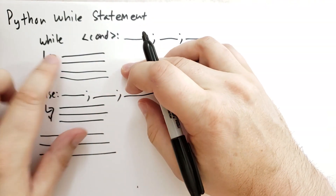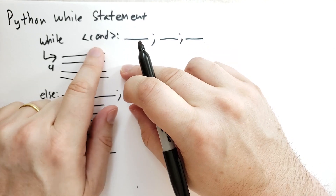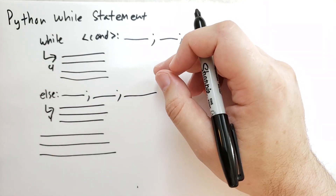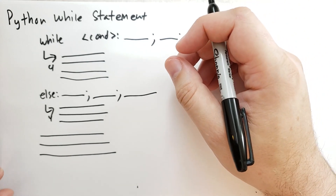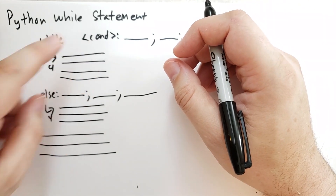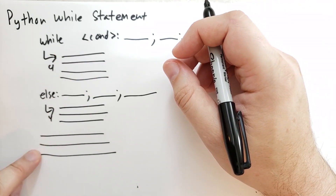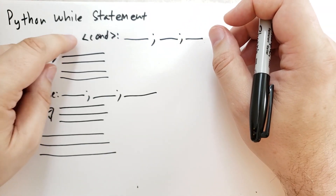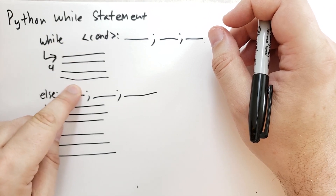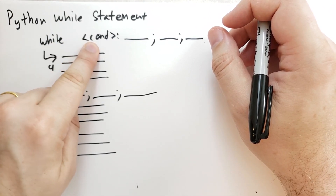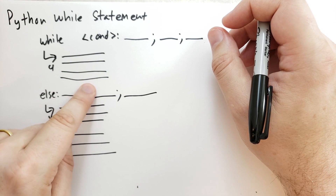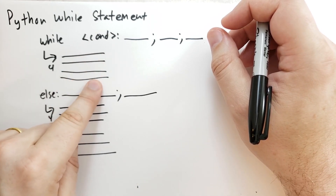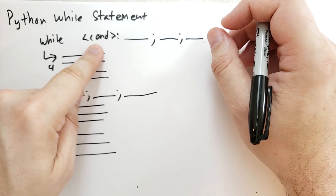The effect of the while statement is that it first evaluates the condition. If the condition is true, then it will run the statements inside of the block — the suite. After it's run an iteration of the block, it will re-evaluate the condition. If the condition is still true, it will execute the block again, and then re-evaluate the condition — if it's still true, it will run the block again, and so on and so forth, until the condition is false.